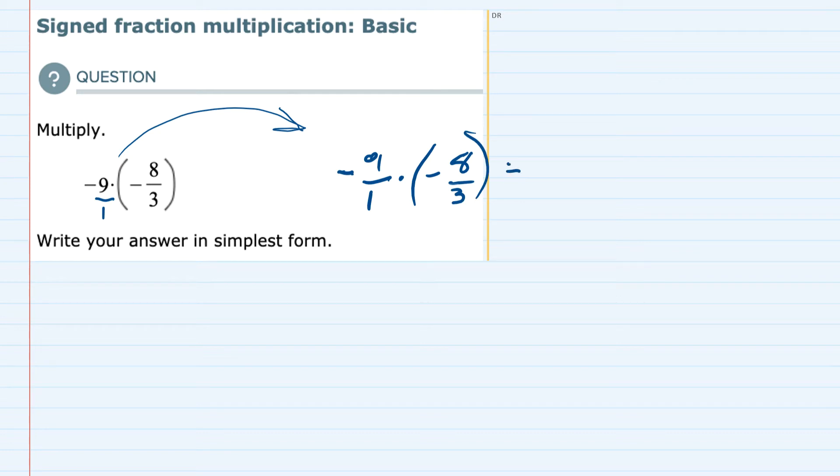And then to multiply, we can multiply the numerators. 9 times 8 gives us 72. Multiply the denominators. 1 times 3 is 3.